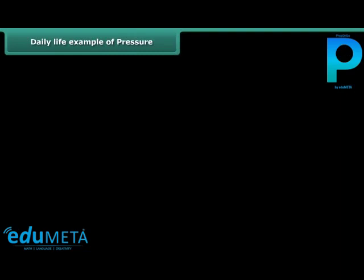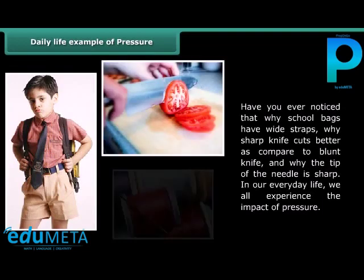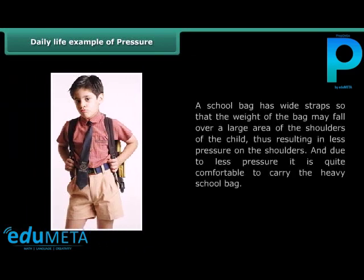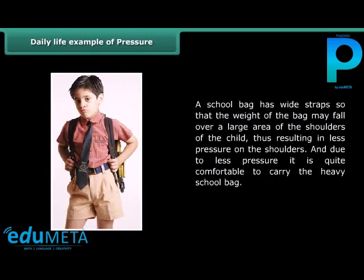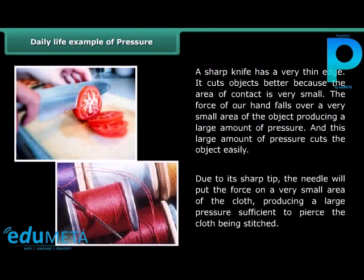Daily life examples of pressure. Why do school bags have wide straps? Why does a sharp knife cut better compared to a blunt knife? And why is the tip of a needle sharp? A school bag has wide straps so that the weight falls over a large area of the shoulders, resulting in less pressure, making it comfortable to carry. A sharp knife has a very thin edge — the area of contact is very small, producing a large amount of pressure that cuts the object easily. Similarly, the sharp tip of a needle puts force on a very small area of cloth, producing large pressure sufficient to pierce the cloth.